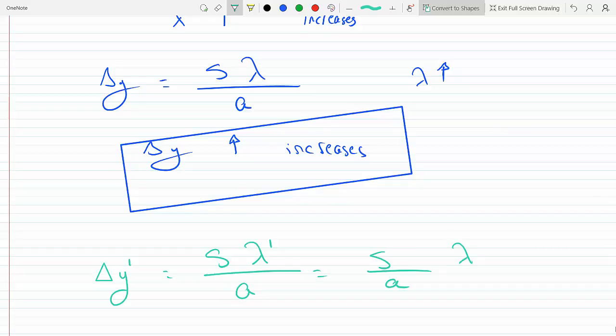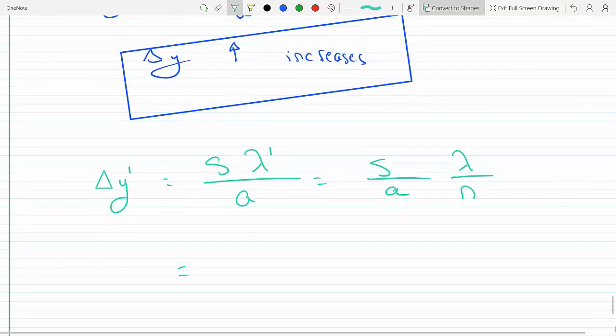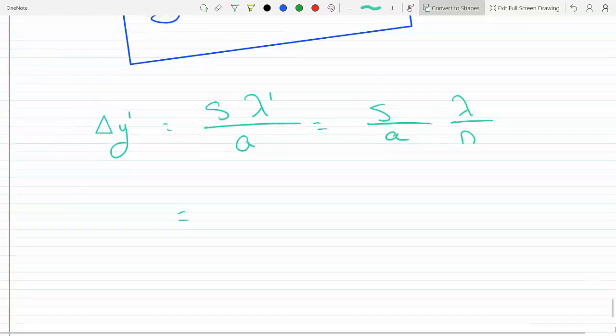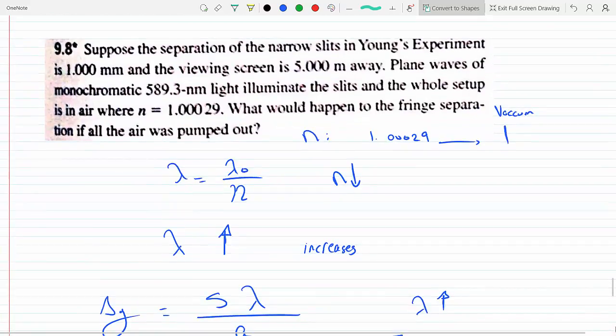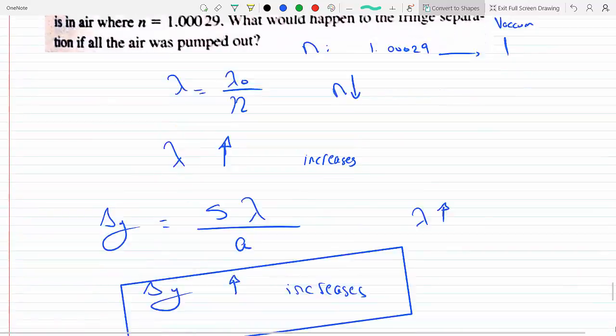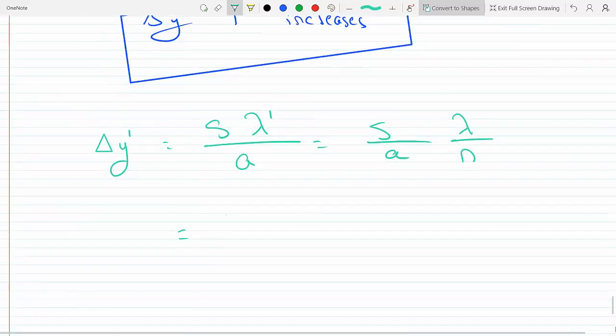Now s over a is the same, and lambda prime will just be lambda over n. And so we get s as the viewing screen is five meters away...